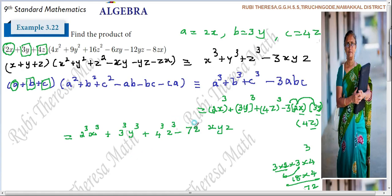So, if you are writing, better you can write here. 2³. Better you put the bracket. 2³ is 2 into 2 into 2. 2, 2s are 4. 4, 2s are 8. 8x³. Plus 3³. 3³ is 27. 3 into 3 into 3. 3, 3s are 9. 9, 3s are 27. 27y³. Plus 4³. 4³ is 64. 4, 4s are 16. 16 into 4, 64.